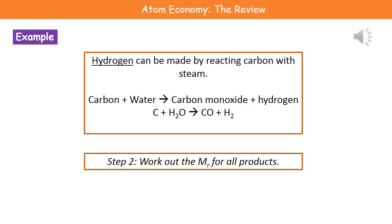Step two is to work out molecular masses for all the products. We don't need to worry about the left-hand side of the arrow, just what's on the right-hand side: the carbon monoxide and the hydrogen. To calculate molecular mass, look at the atomic mass of each element and add them in the correct proportions. Carbon monoxide is one carbon and one oxygen: carbon has an atomic mass of 12, oxygen 16, so 12 + 16 = 28.